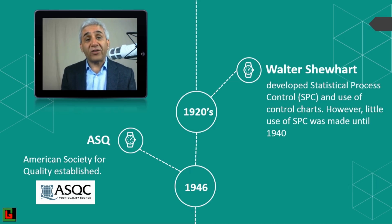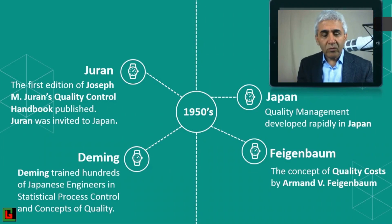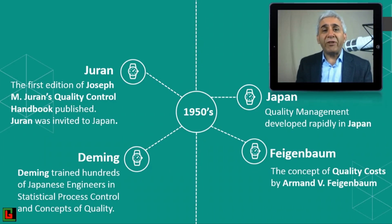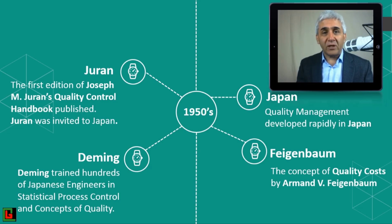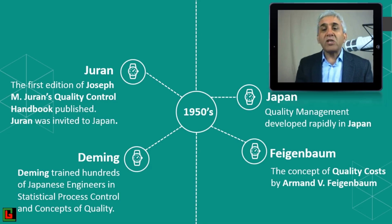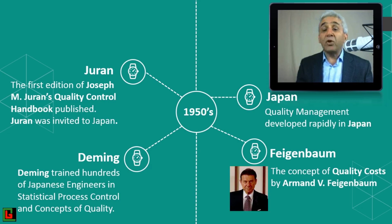Coming to the 1950s and 1960s — I would say this was the golden era of quality management. A lot of new concepts were developed during this time, and most of those were in Japan. Japan was developing quality management rapidly. In the 1950s, Feigenbaum introduced the concept of quality cost, which you will learn about in another presentation in this course.